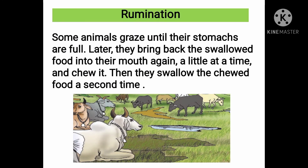Rumination: Some animals graze until their stomachs are full. Later, they bring back the swallowed food into their mouth again, a little at a time, and chew it. Then they swallow the chewed food a second time. This is called rumination. Rumination helps them to digest their food properly. Cows and buffaloes are animals that ruminate.